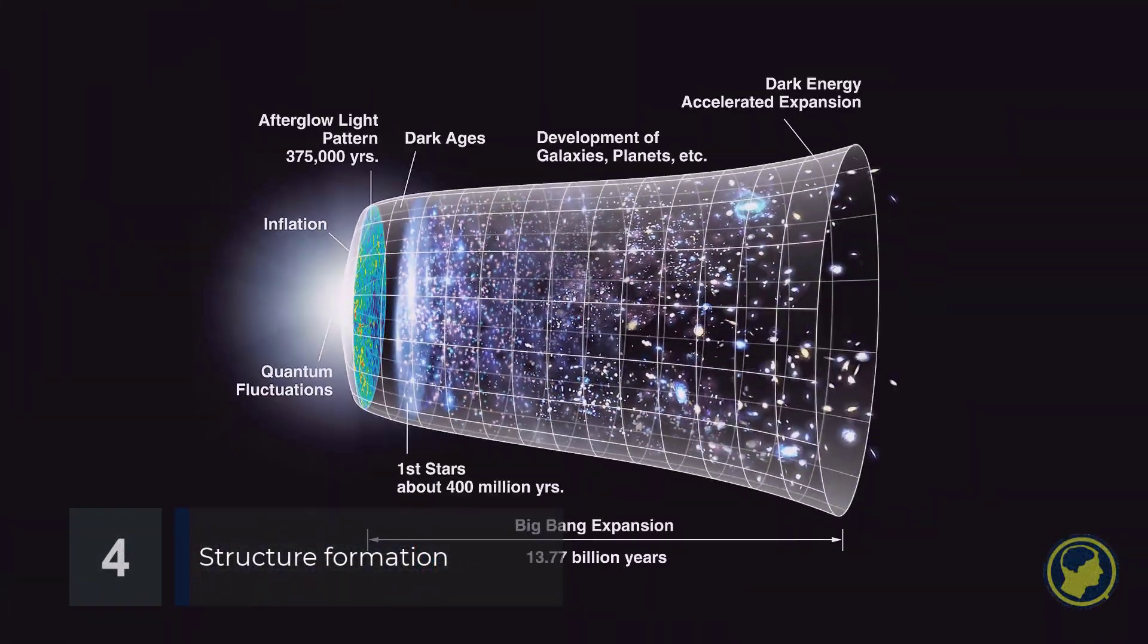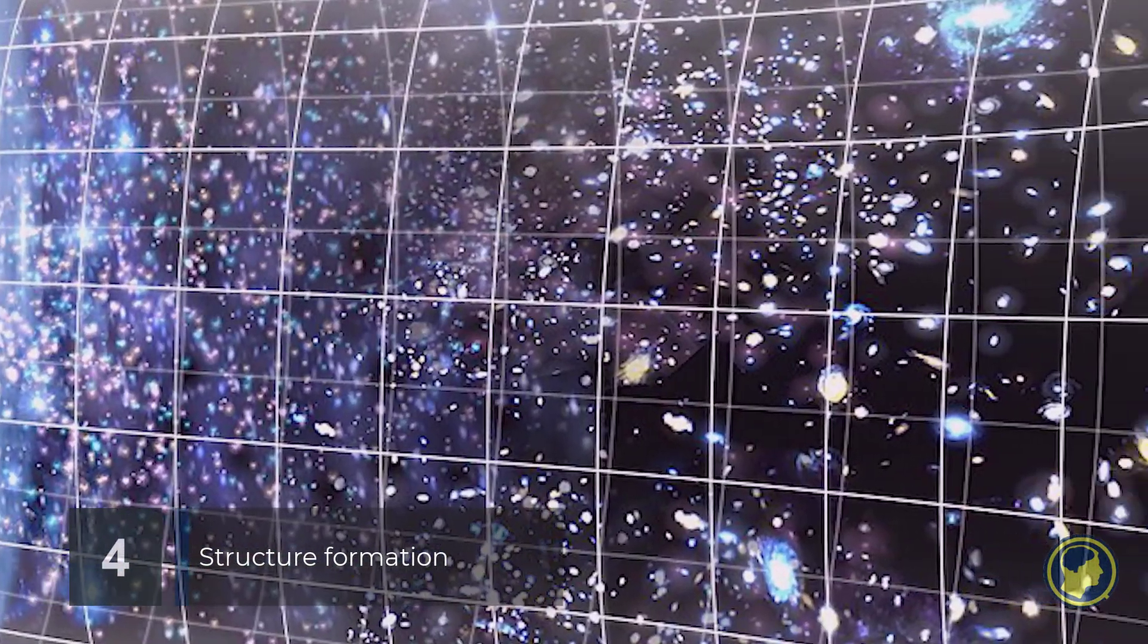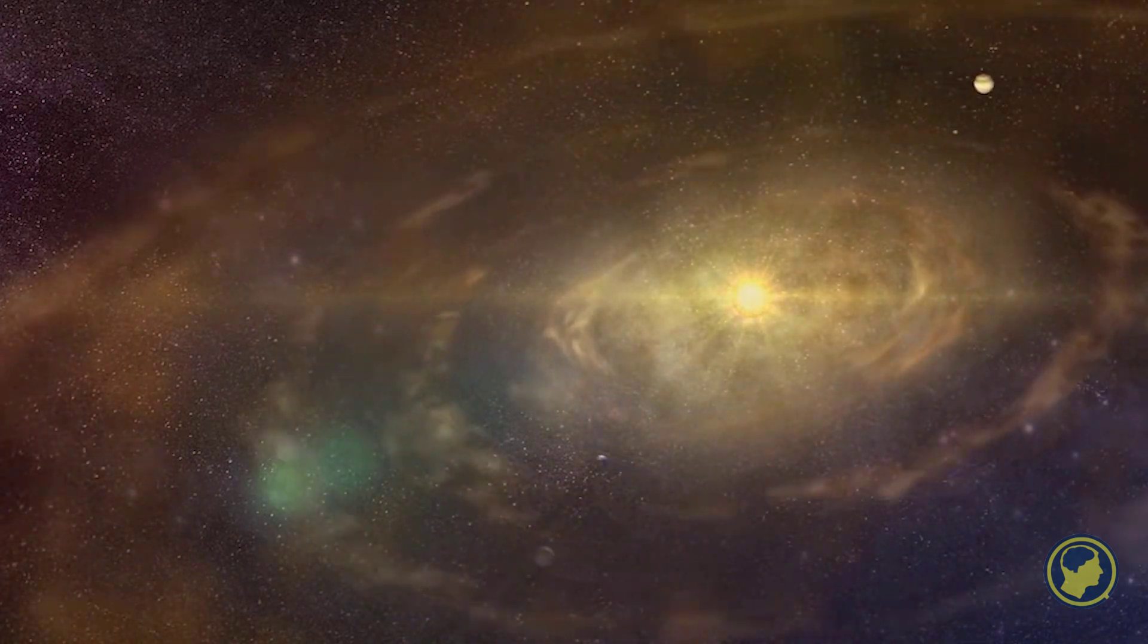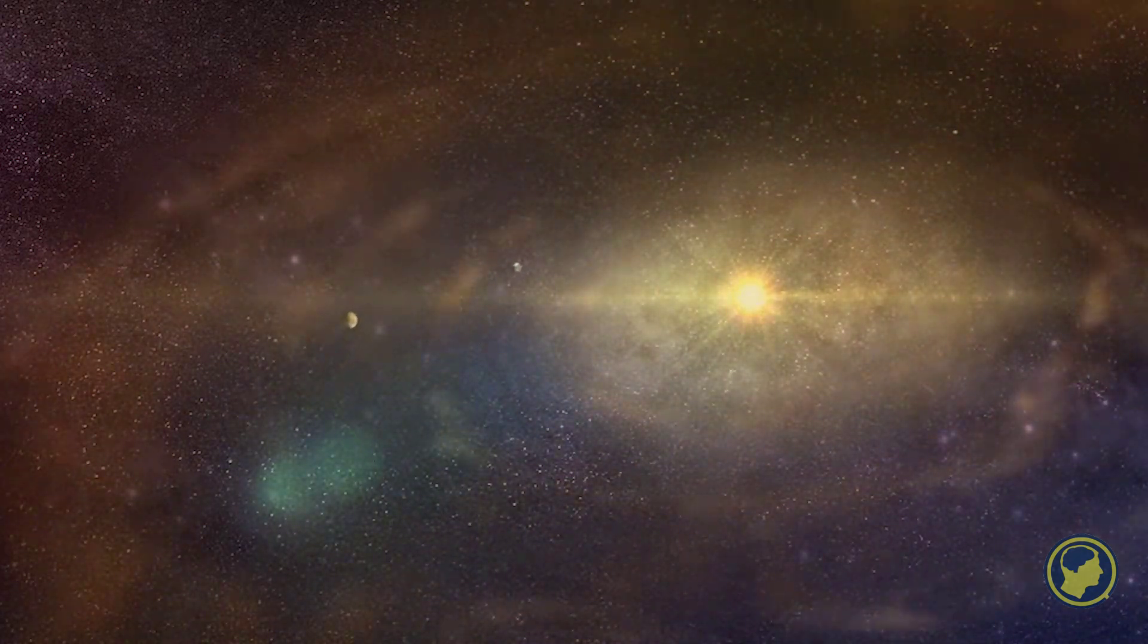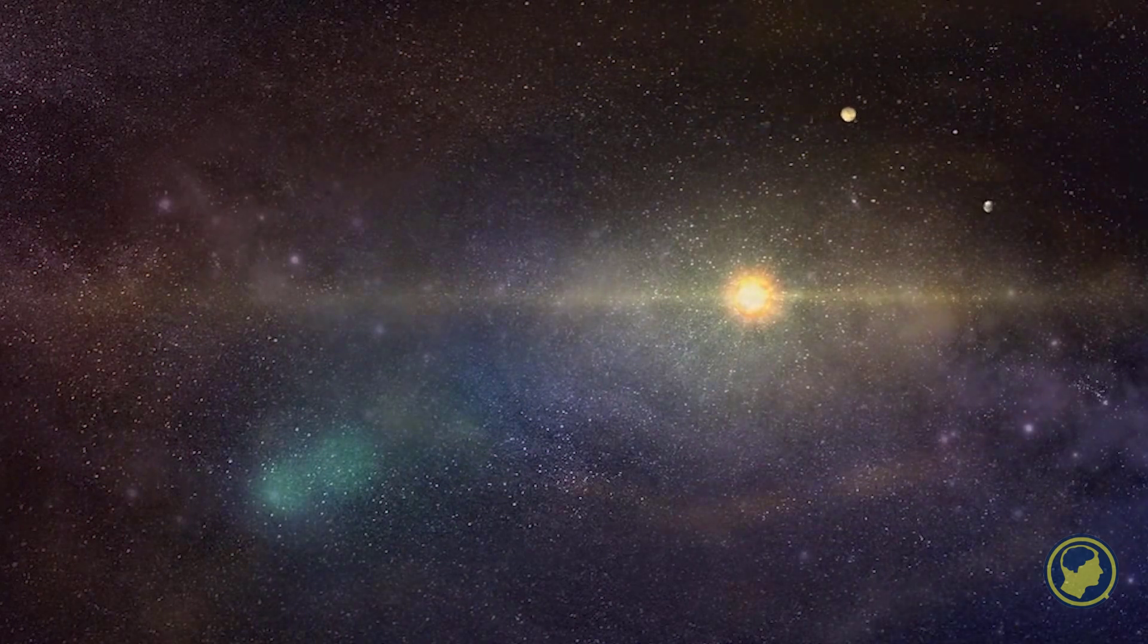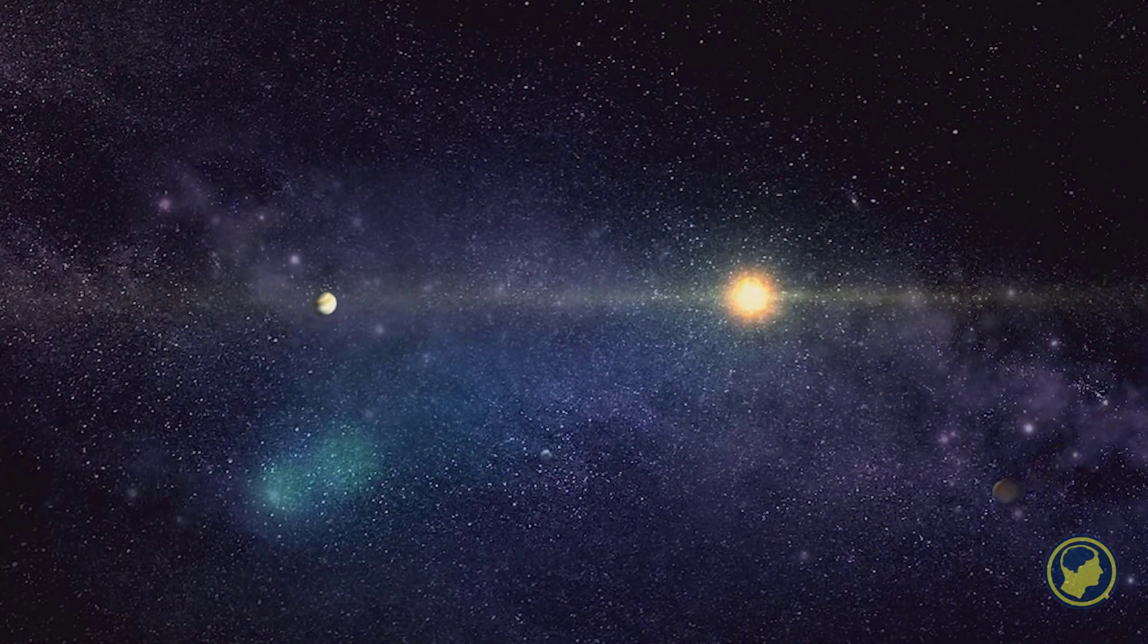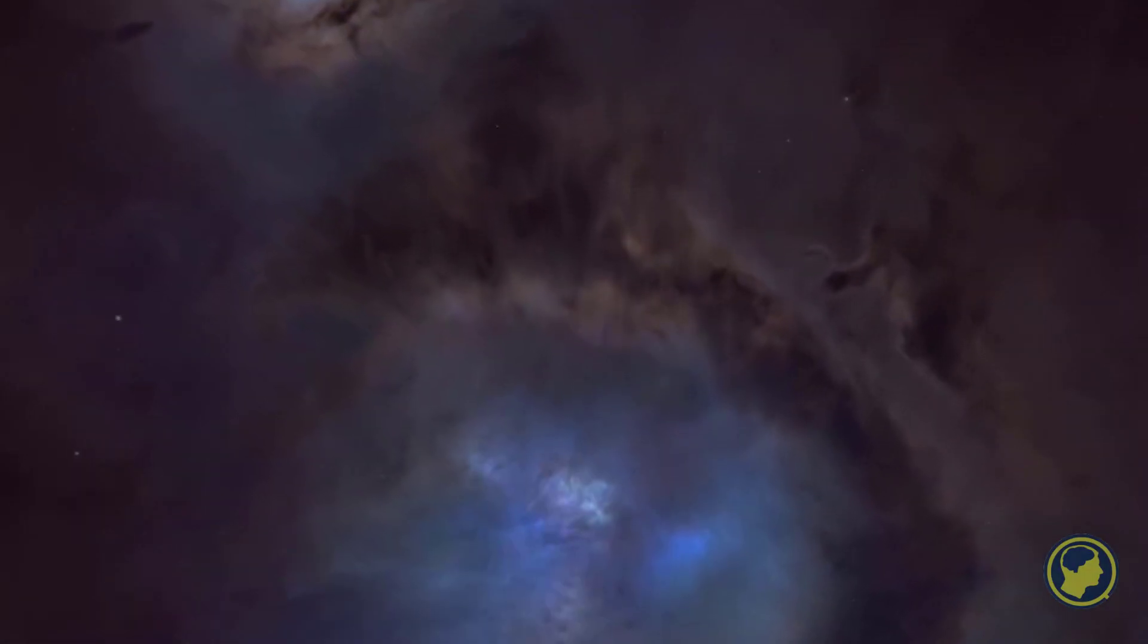After cooling, the formation phase began. During this long dormant period, denser matter gravitationally attracted lighter matter, and the fabric of the universe became altogether more dense. This period also formed gas clouds, galaxies, stars, and other cosmic structures.